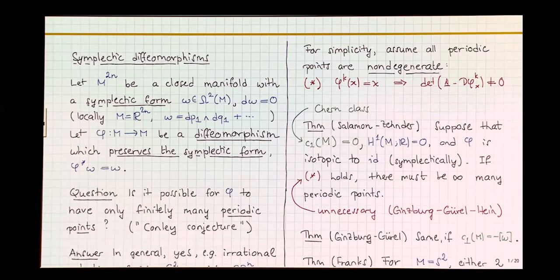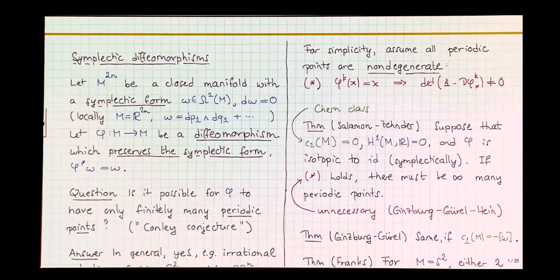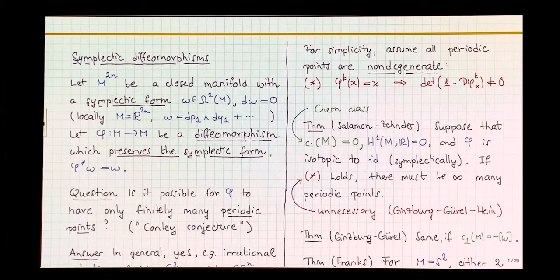You want to have a diffeomorphism — an invertible differentiable map — which preserves the symplectic form, written like this. What it essentially means is a condition on the derivative of phi at any point.